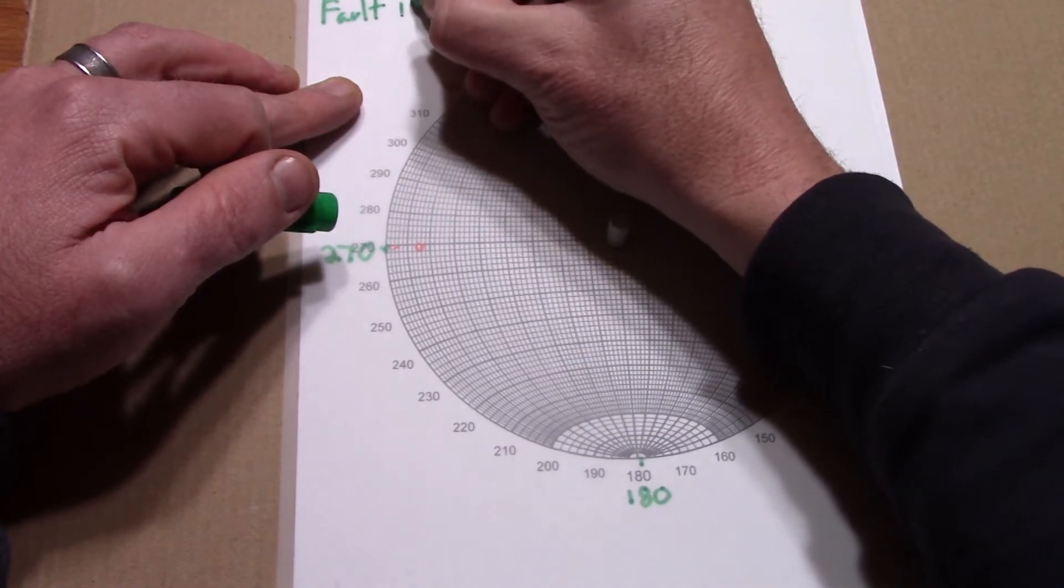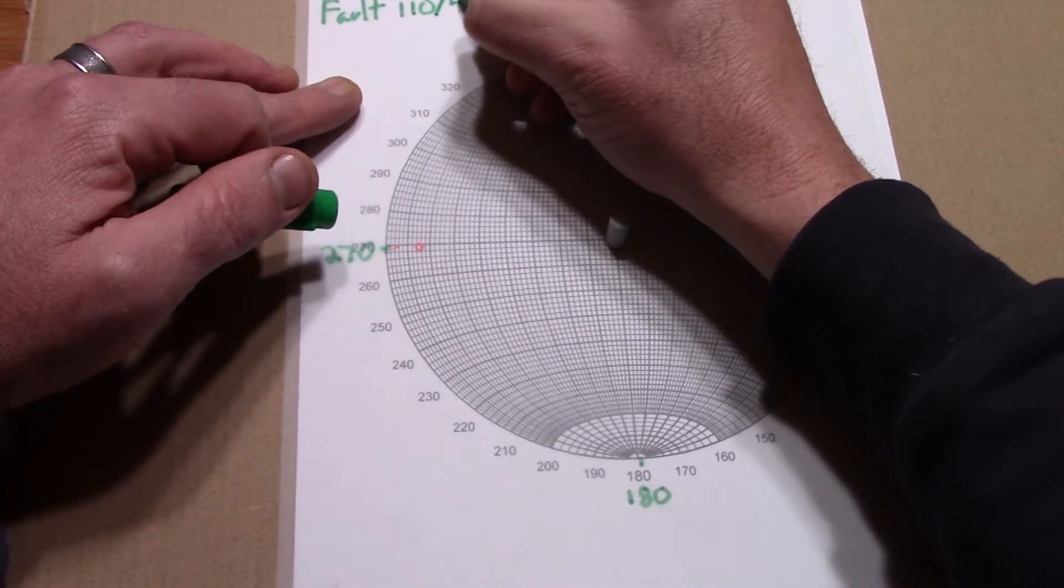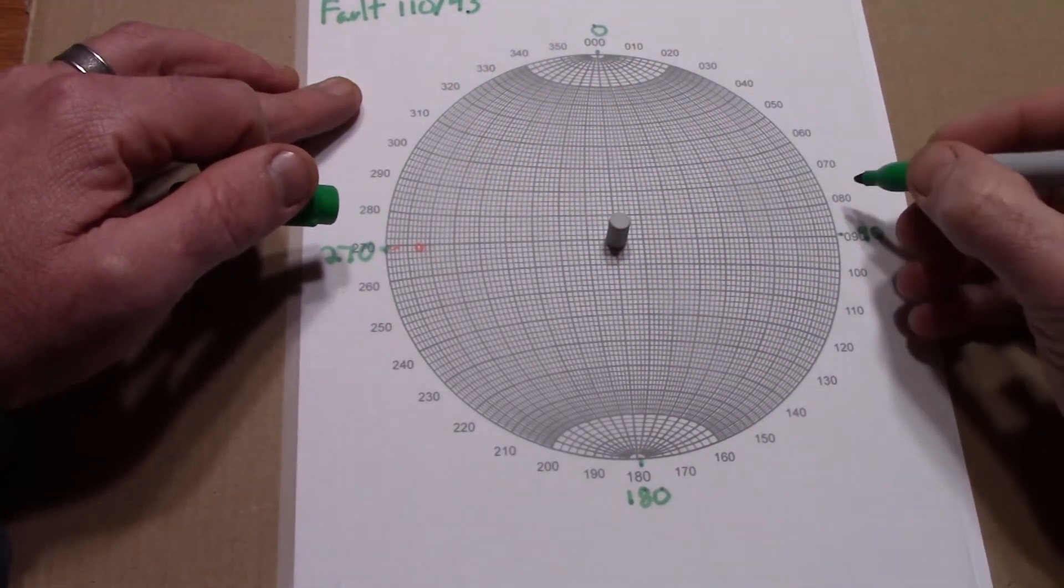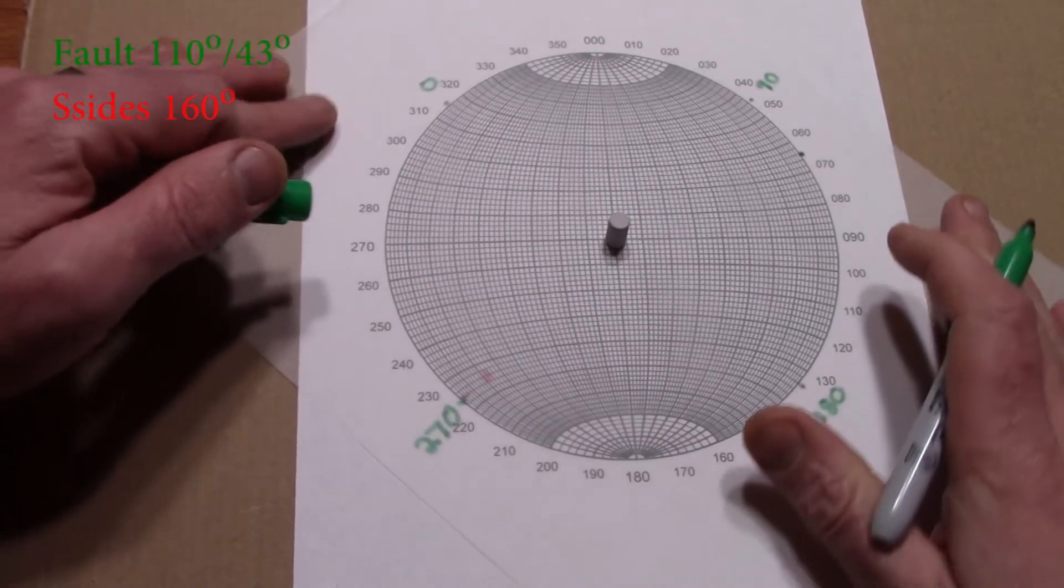First we might measure the planar feature, the fault in this case, and let's say we get 110,43. If the linear feature is being measured in the plane, as with these slicken sides, we just note the direction of plunge of the lineations, and these lines trend 160 degrees in the direction they dip down.